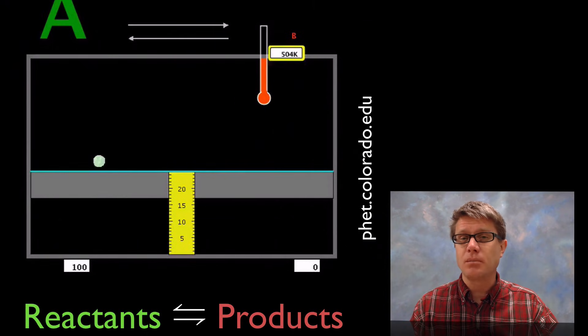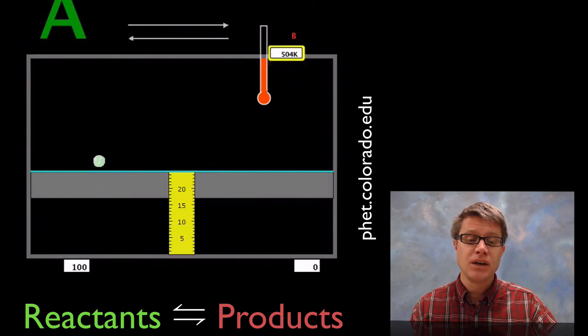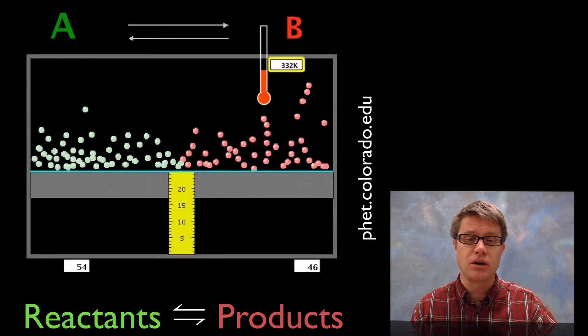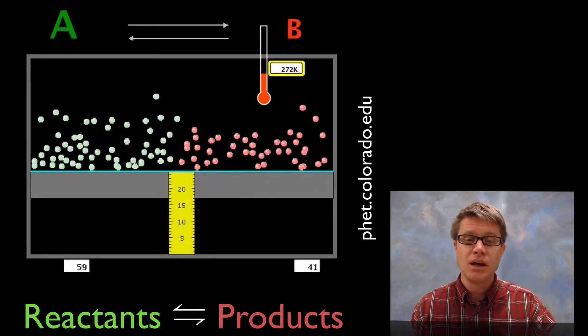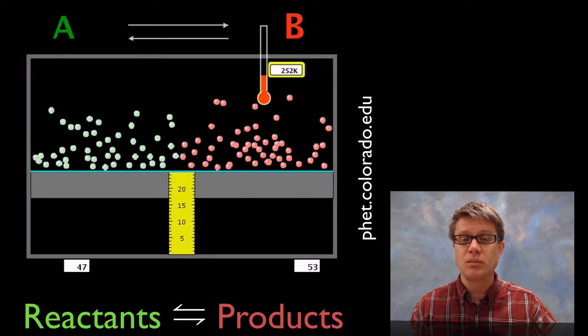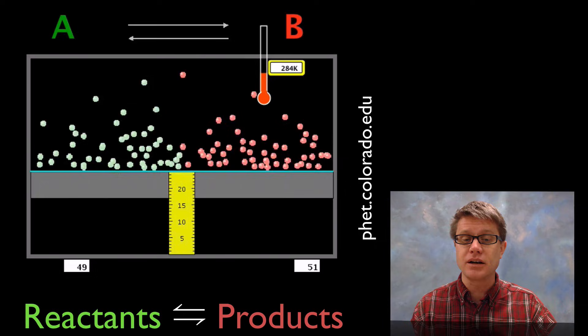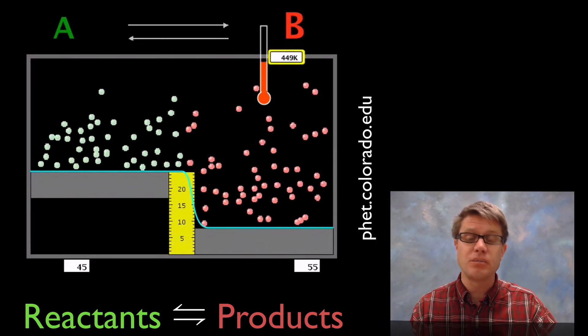I want to start with a model. This is a PHET model. It is not a reversible reaction per se, but it shows how they work. On the left side we have some molecules, we'll call those A and color them green. They're going to randomly bounce around. When they move to the right side they're going to become red and we'll call those products. As long as the level is the same, we have about the same amount.